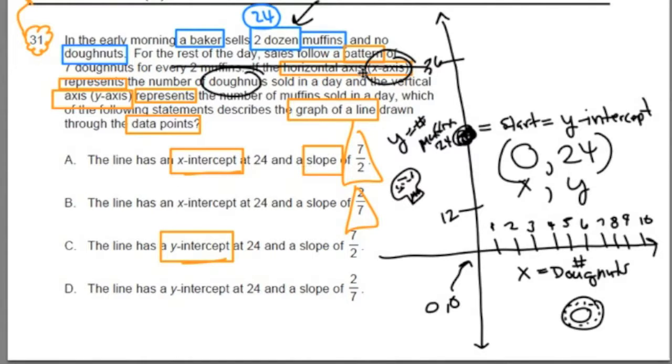And then we follow this pattern. And pattern—I like that word pattern here. Pattern is code for the slope. So we can think of the pattern here as the slope, or relationship between the rise and the run.